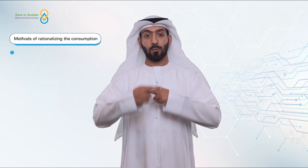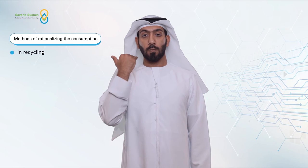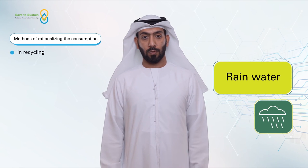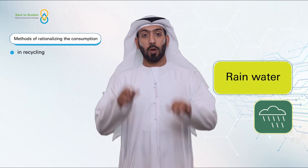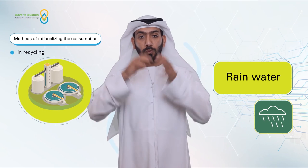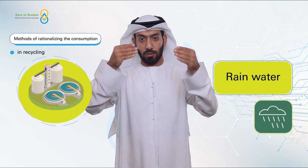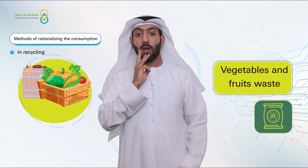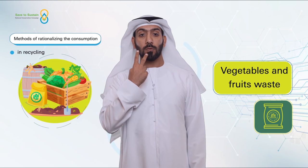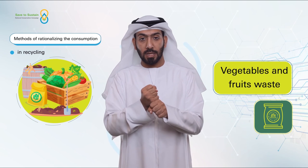Methods for rationalizing water consumption and recycling — rainwater: the process of benefiting from rainwater is by installing a system to collect rainwater in large tanks and then using this water in the garden. Vegetables and fruits waste recycling: recycle the waste of vegetables and fruits in the form of compost instead of disposing of them, which increases the period of water retention within the soil.